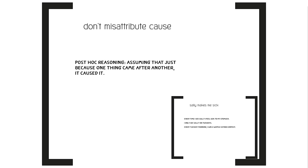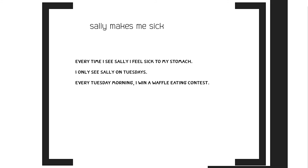One final note on misattributing causes: post hoc reasoning. This logical fallacy is when you assume one thing is responsible for another just because it comes right before it. For example, let's say every time I see Sally, I get sick. I might assume she makes me sick. But what if prior to seeing Sally, I enter into and win a waffle eating contest? Just because my sickness follows seeing Sally doesn't mean it can fairly be attributed to her in a cause-effect relationship.